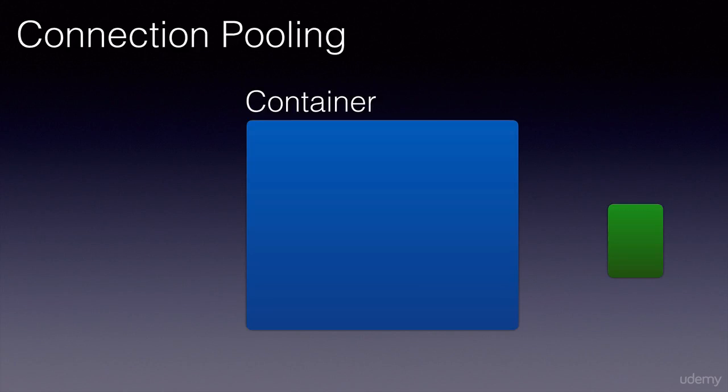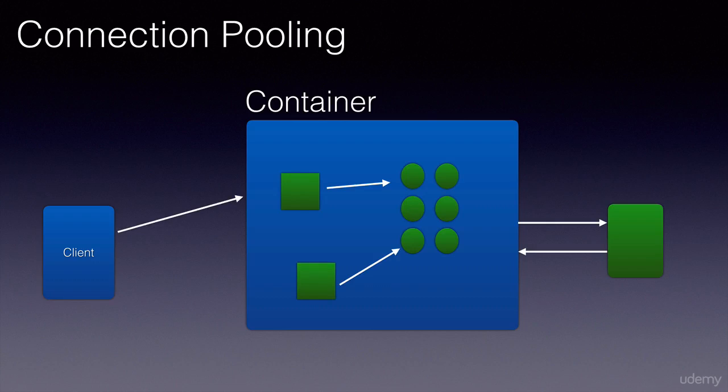Connection pooling allows us to request the container to create a set of JDBC connections right when it starts up. These connections can then be used by servlets or JSPs or any other web resource to do what they have to do and send the connection back once they are done with their work.